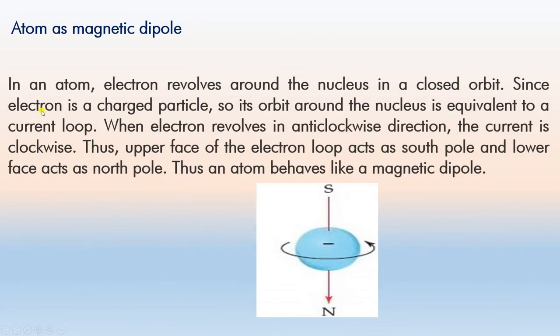Today's topic is the atom as a magnetic dipole. In an atom, electrons revolve around the nucleus in closed orbits. Since an electron is a charged particle, its orbit around the nucleus is equivalent to a current loop. When an electron revolves in the anticlockwise direction, the current is clockwise, so the upper face of the electron loop acts as a south pole and the lower face as a north pole. Thus an atom behaves like a magnetic dipole.